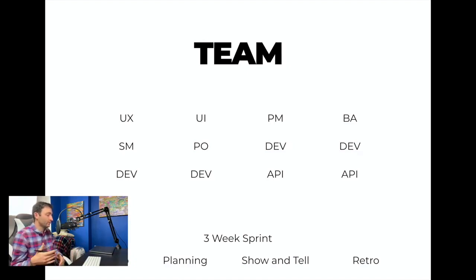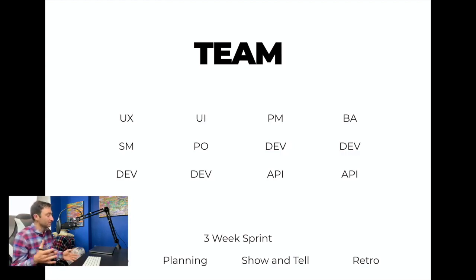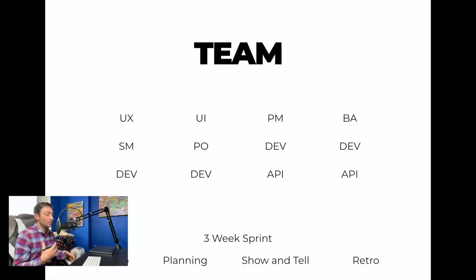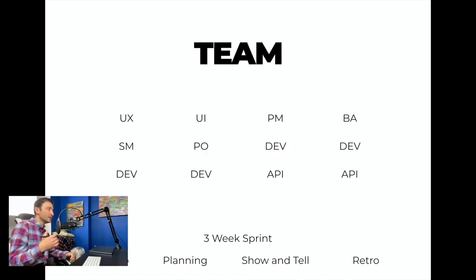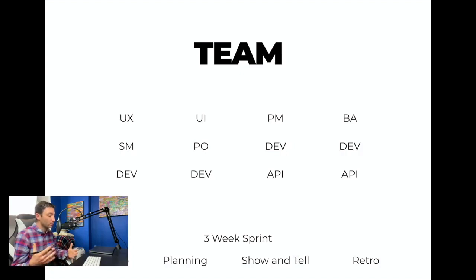It seems to be a better process because you're testing more regularly — you're not waiting for a massive thing to be released and then realizing it's all broken. A scrum master is someone who helps that process along and it could change every three weeks. A PO — product owner — is perhaps the most important role. The project manager looks after the work, but the product owner represents the business.